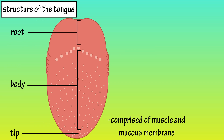The tongue has a root, a tip, and a central body to its structure. The upper surface of the tongue is covered by small rough elevations called papillae.